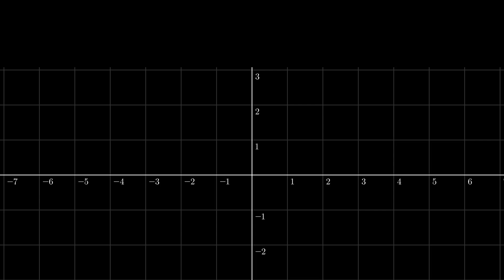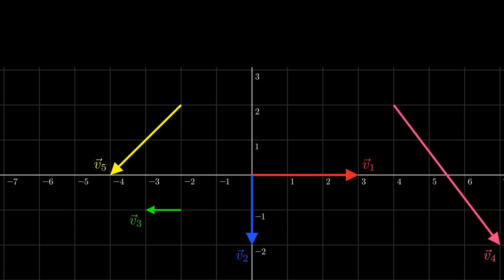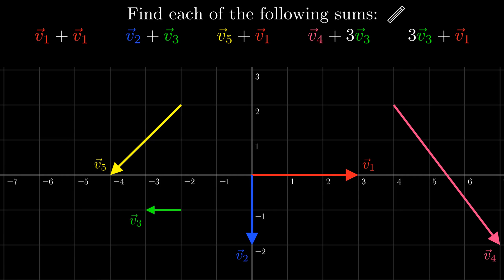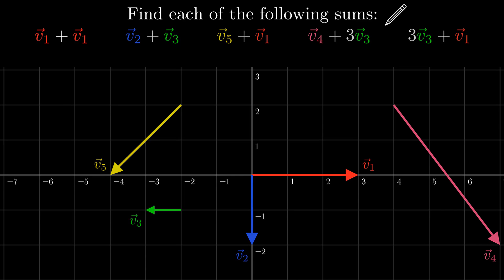Let's do an exercise to make sure you know how to add vectors. Here are the same vectors from the previous video — find each of these vectors. Please pause the video and solve this. Let's first do v1 plus v1. All we have to do is make a copy of v1 and place it on the end. Then the sum is the vector going from 0 to 6. Note that since v1 is on the x-axis, this is basically the same as saying 3 plus 3 is 6.